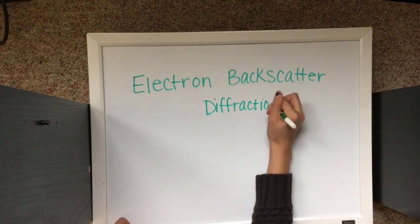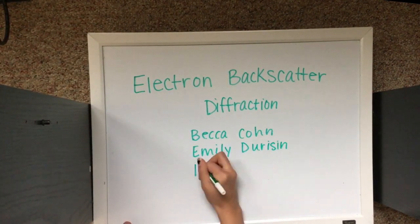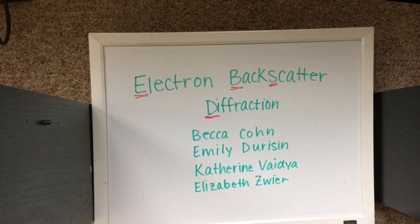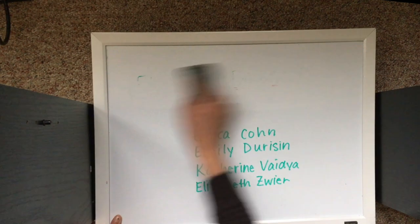Hi guys, today we'll be talking about a structural characterization technique known as electron backscatter diffraction, or EBSD. This technique can be used to determine grain morphology and crystallographic orientation.